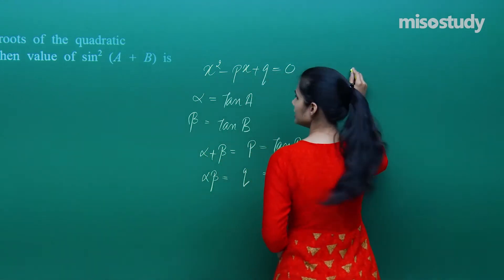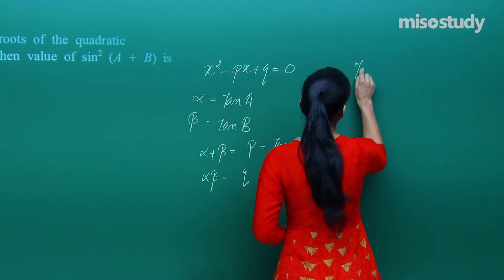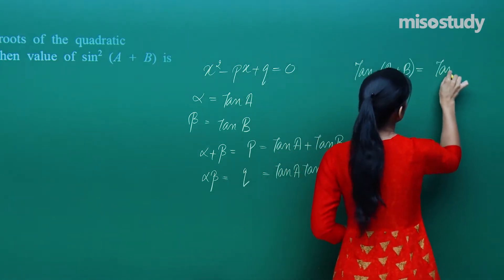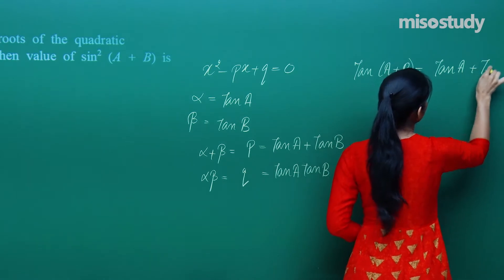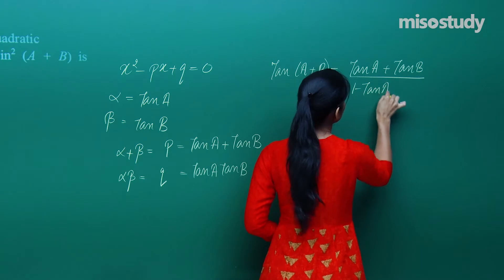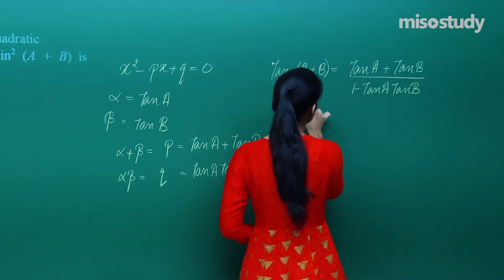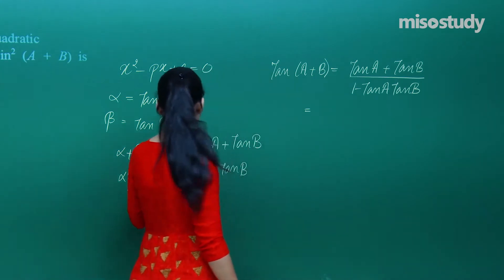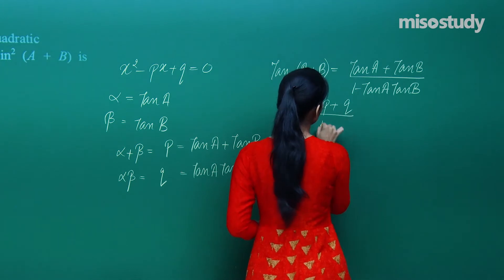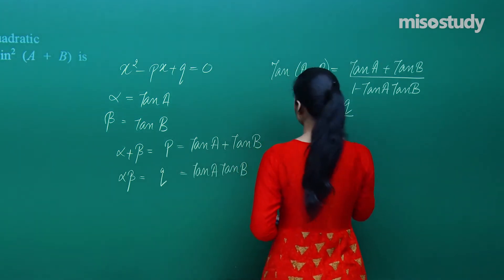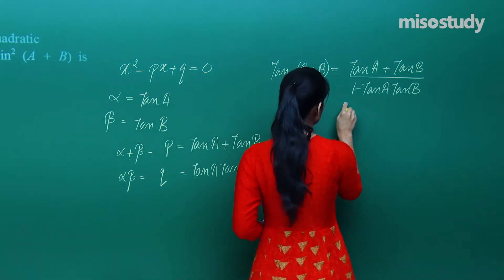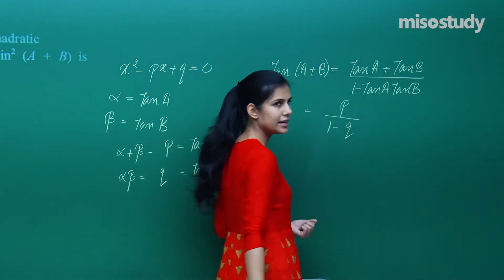Now we need to find sin²(a+b). We know that tan(a+b) = [tan(a) + tan(b)] / [1 - tan(a)·tan(b)]. This involves the sum and product of tan(a) and tan(b), whose values we already have. Plugging in, tan(a+b) = p / (1 - q).